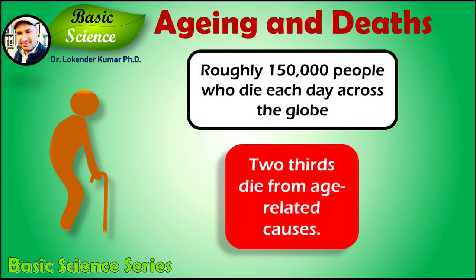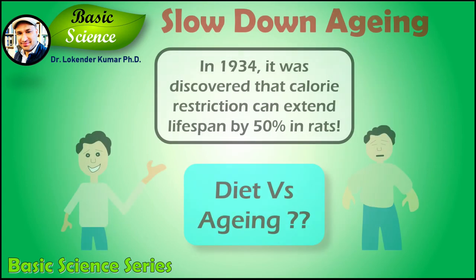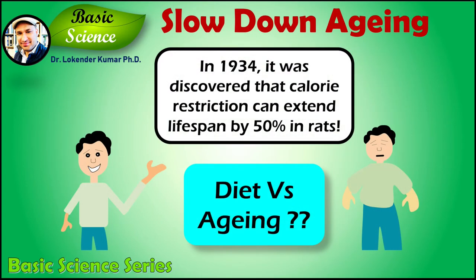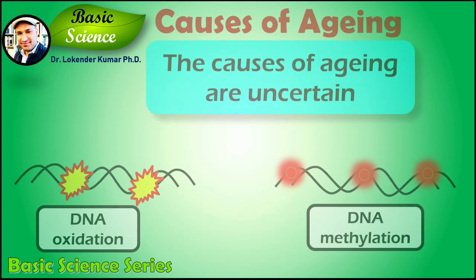Aging is among the greatest known risk factors for most human diseases. Roughly 150,000 people die each day across the globe, and about two-thirds die from age-related causes. In 1934, it was discovered that calorie restriction can extend lifespan by 50% in rats, and this has motivated research into delaying and preventing aging.